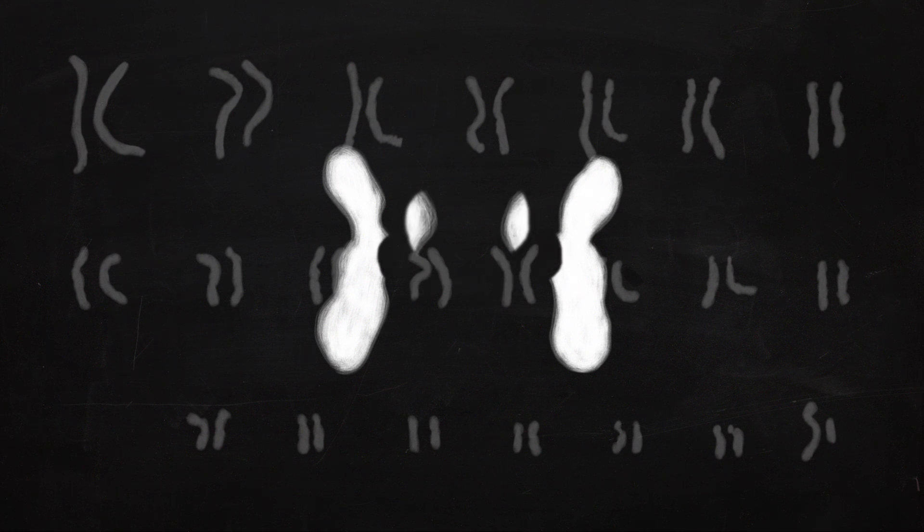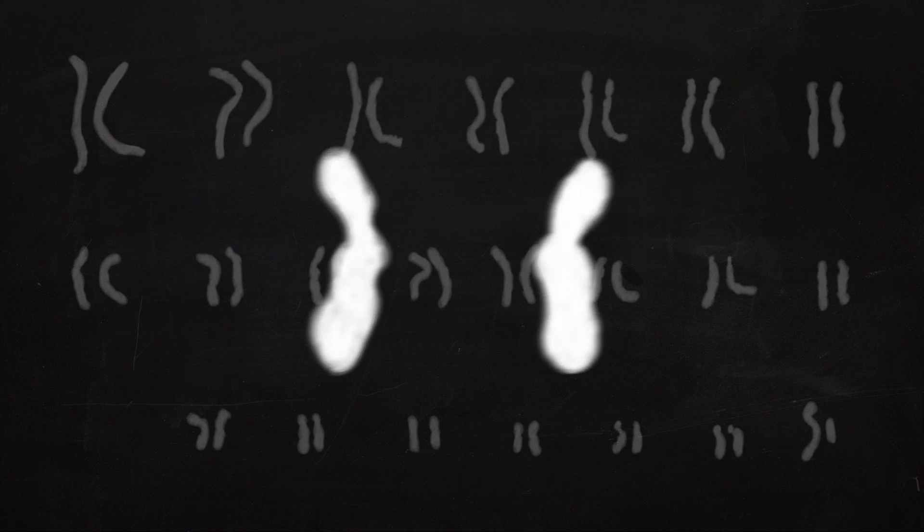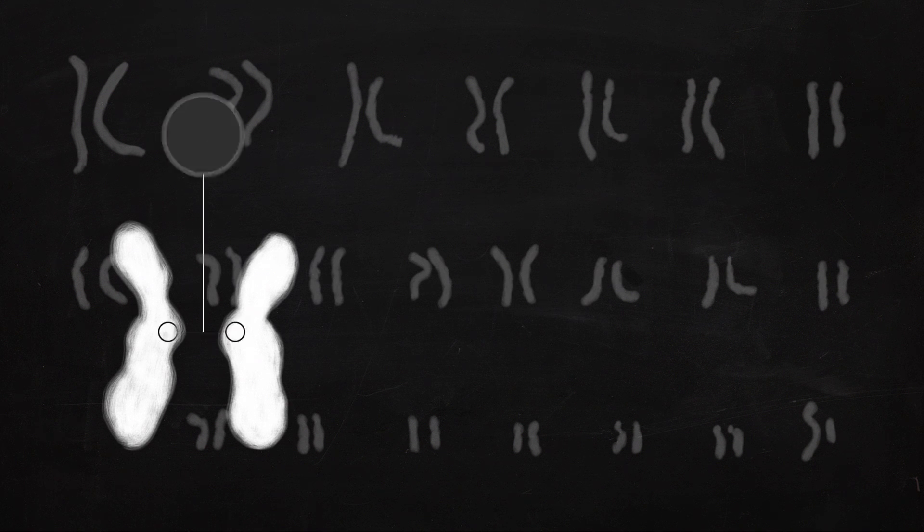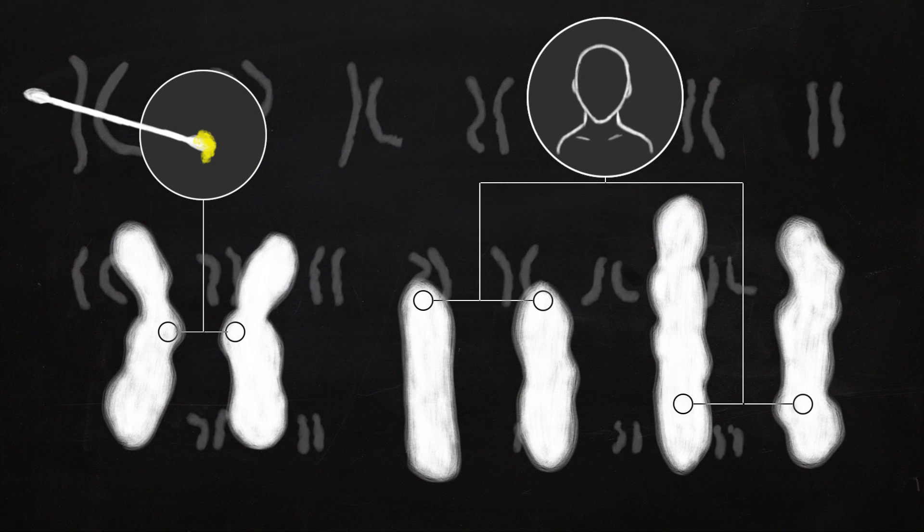A gene is a certain stretch of DNA that codes for a given protein or trait. Some traits are controlled by a single gene, like earwax consistency. Others are controlled by multiple genes, like hair color.